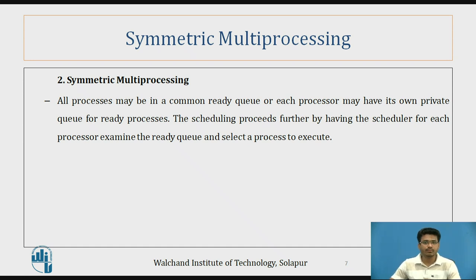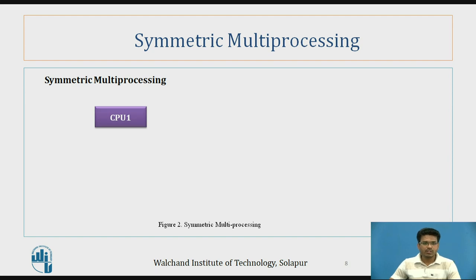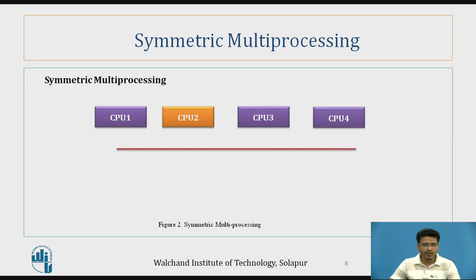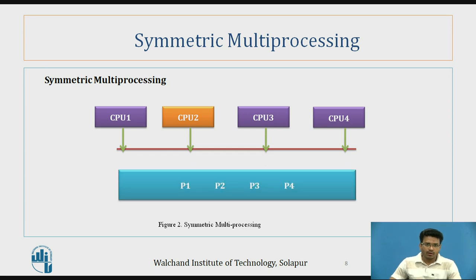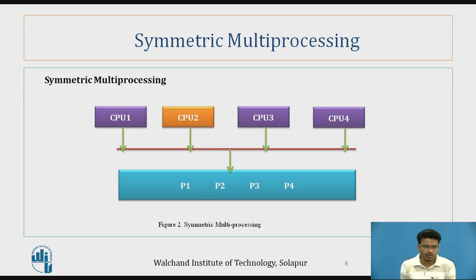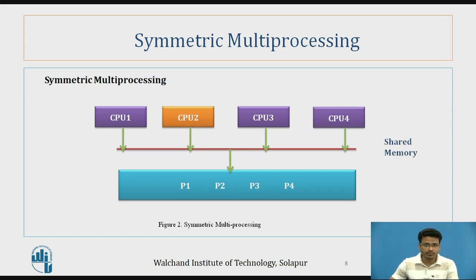In the diagram, we have CPU1, CPU2, CPU3, and CPU4, all connected through one bus. Different processes P1, P2, and P4 can share their data with each other — that is symmetric multiprocessing. In asymmetric multiprocessing, CPUs do not share anything, but in symmetric multiprocessing, memory is shared between the different processes.